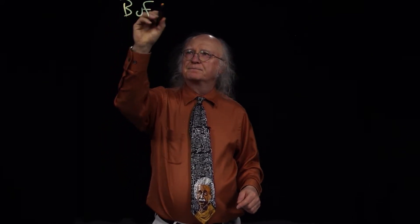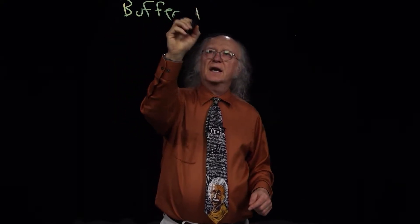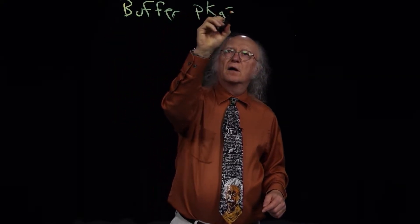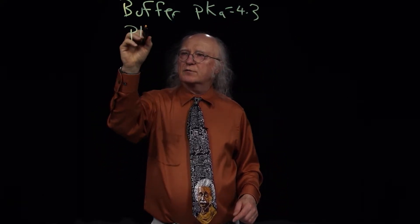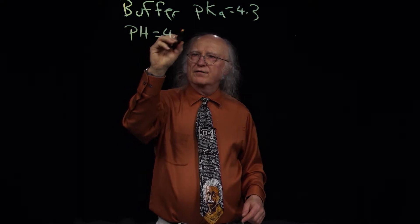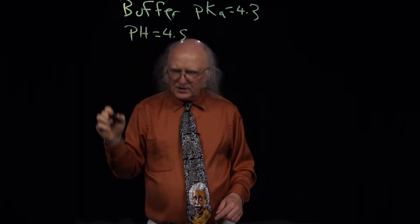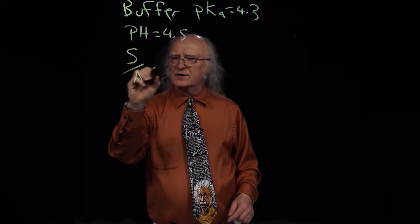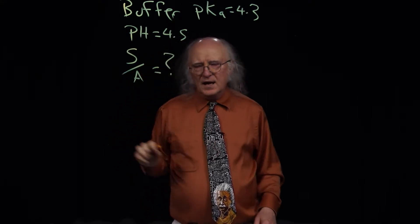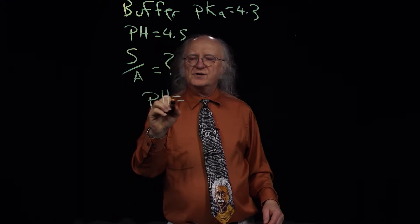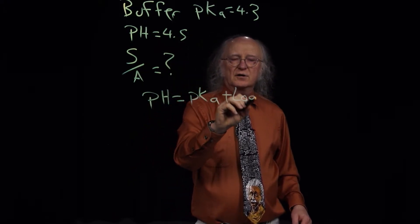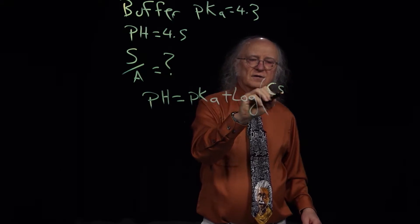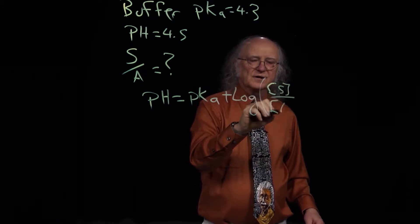For problem number eight, we say that we have a buffer again. It has a pKa value of 4.3 and it is in a solution with a pH of 4.5. The question is: what is the ratio of salt to acid? We go back to our Henderson-Hasselbalch equation: pH equals pKa plus the log of concentration of salt over concentration of acid.